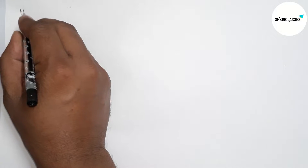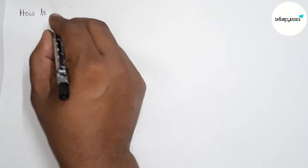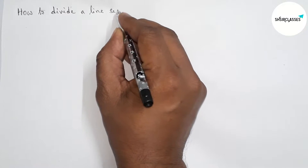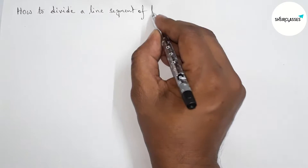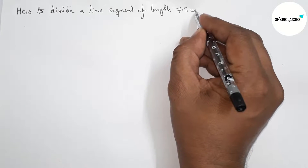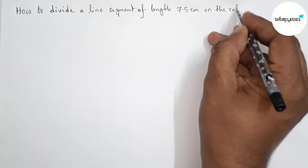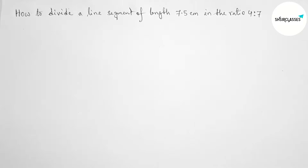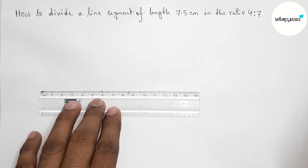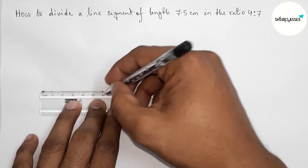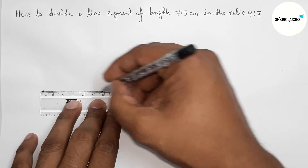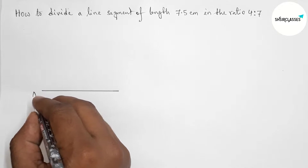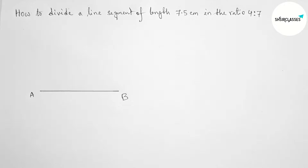Hi everyone, welcome to SI Share Classes. Today in this video we'll see how to divide a line segment of length 7.5 centimeters in the ratio 4 is to 7. Please watch the video till the end. First of all, let us draw the given line segment of length 7.5 centimeters. This is the 7.5 centimeter line segment, with points A and B, so AB = 7.5 centimeters.